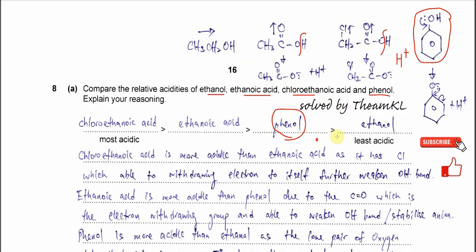Why is ethanol the least acidic? Ethanol has an ethyl group, which is electron donating — it pushes electrons toward the O–H bond. This increases the electron density on the O–H bond, strengthening it. When this bond gets stronger, it is harder to break, so it forms fewer H⁺. That's why ethanol is the least acidic.